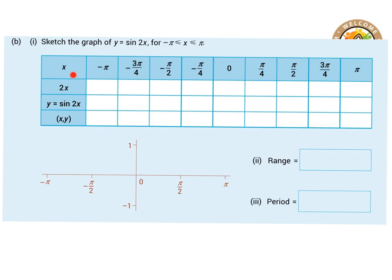So what we're going to do first is we're going to split it into just finding 2x. So if x is minus pi, 2x is going to be minus 2 pi. And then if that's the case, the sine of minus 2 pi, what will that be?